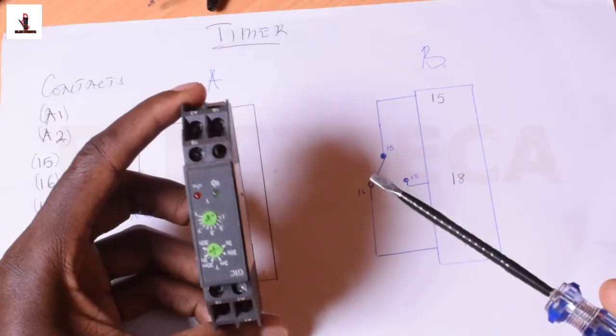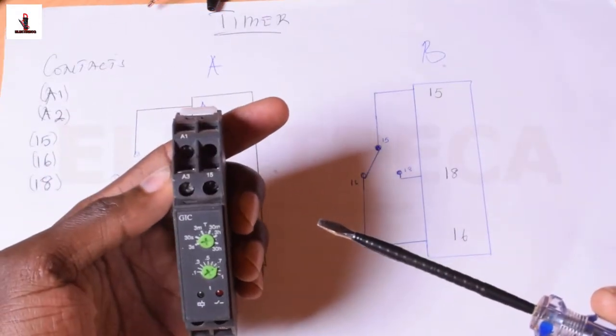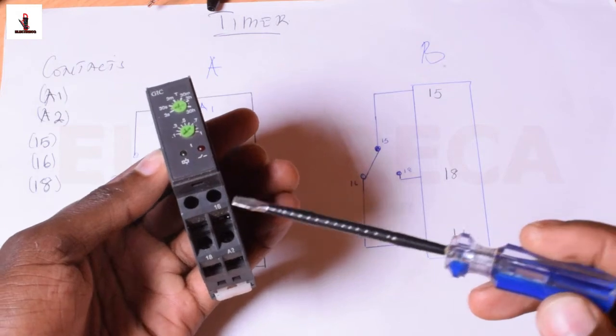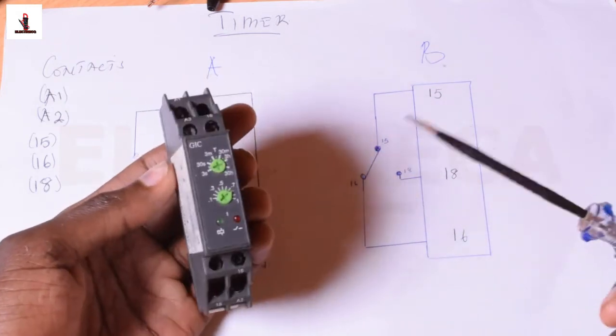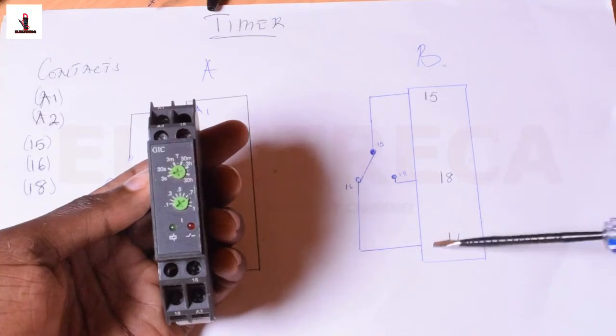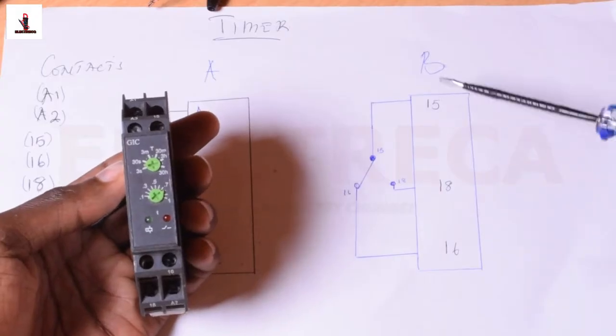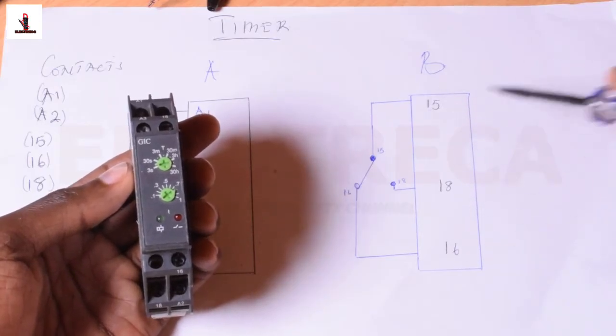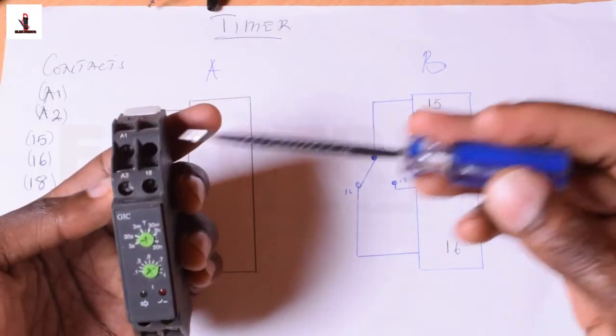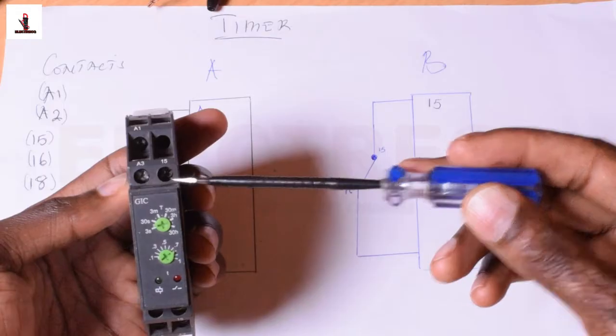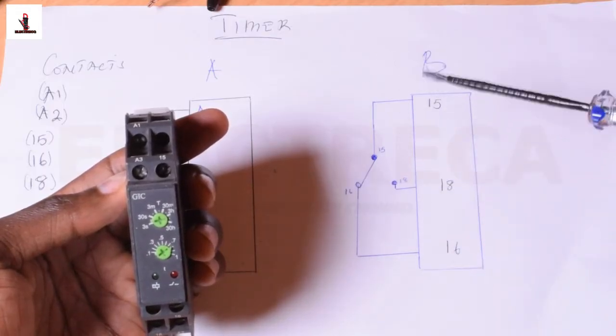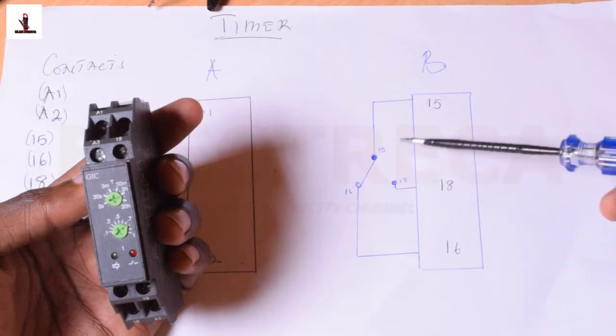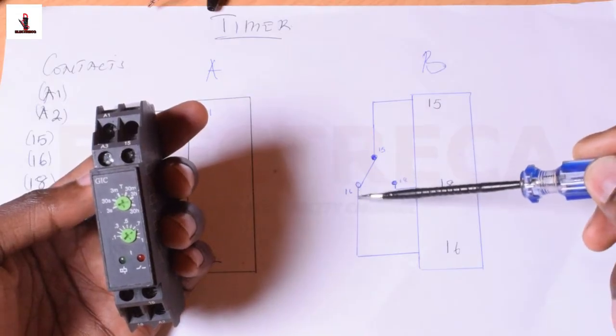Now it has got other contacts. It has got A1, it has got A3, it has got 15, 16, 18, and A2. We already talked about that. Now, we have these three contacts that we are going to look at and use: we have 15, 18, and 16. Now, 15 is common—this one is common—and this is where you have to feed your live.